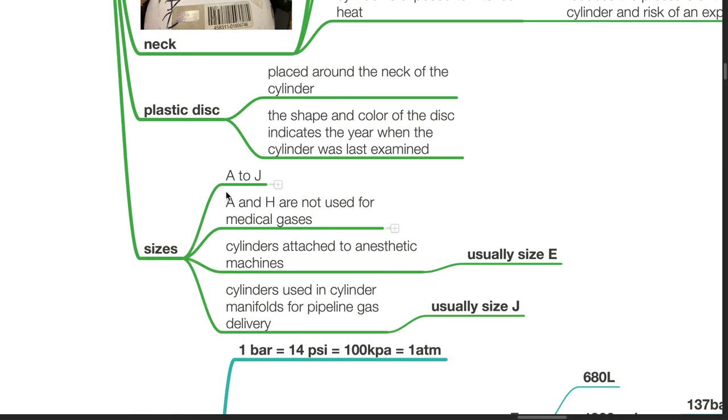Cylinder sizes range from A to J. A and H are not used for medical gases. Cylinders attached to anaesthetic machines are usually size E. Cylinders used in cylinder manifolds for pipeline gas delivery are usually size J.